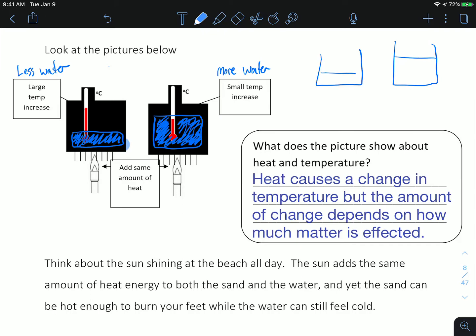Meanwhile, a container with less liquid will have a higher change in temperature. You might do this all the time when you go to boil some noodles or rice. If you use a small pot with a small amount of water and a small amount of rice or noodles, then usually it'll hit the hot temperature faster than if you use a large pot on the same burner with a lot of liquid. This experiment shows that heat causes a change in temperature, but the amount of change depends on how much matter is affected. More matter requires more heat to reach the same temperature.